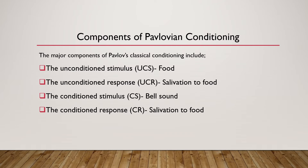On the main components of Pavlovian conditioning, since it was developed by Ivan Pavlov, the main components are: the unconditioned stimulus (UCS), which is the food; the unconditioned response, which is salivation to food; the conditioned stimulus, which is the bell sound; and the conditioned response, which is salivation to the bell. The unconditioned response and conditioned response are the same, while the unconditioned stimulus and conditioned stimulus are different, but after pairing, they elicit the same response — salivation.